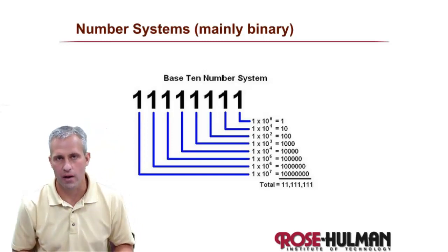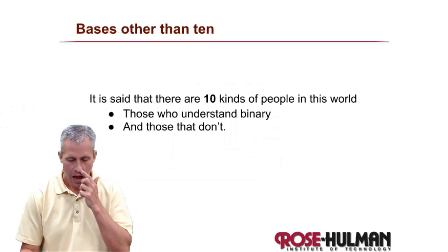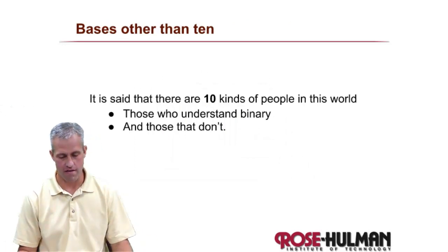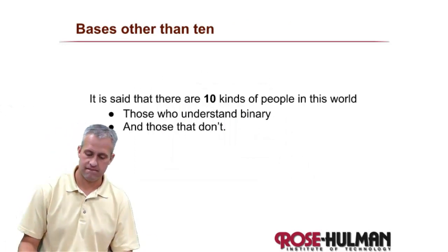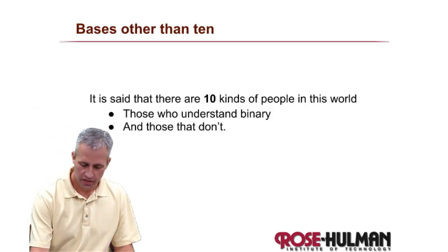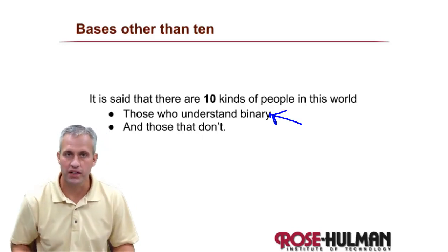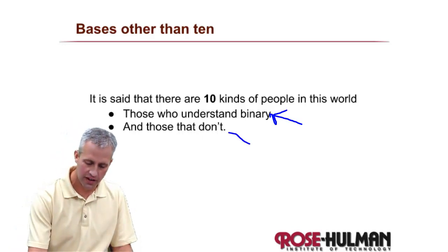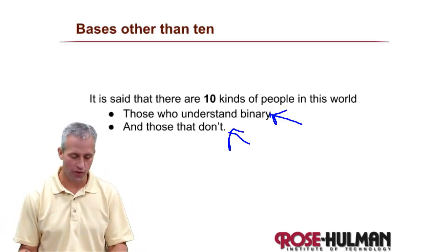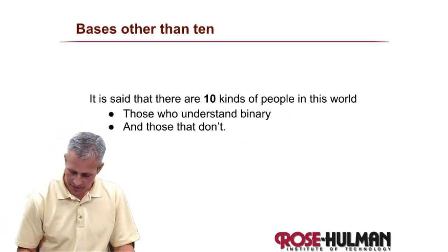Today we're going to be looking at other number systems, mainly binary, because that's the one computers need. I'll start with a little joke — go ahead and read it. If you get it, you fall into the first category. If you don't, the second. If you don't find it funny, that probably means you fall into either category because it's not really that funny — but there are 10 kinds of people in the world.